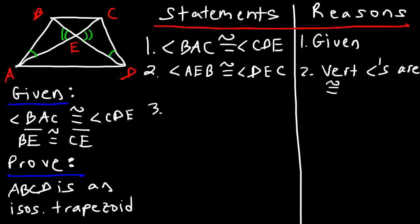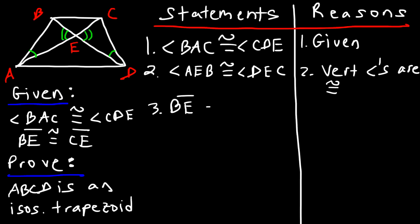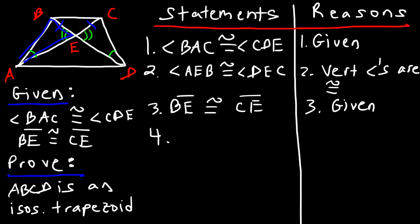Now let's move on to step 3. Focusing on the second given statement: BE is congruent to CE. This is BE and this is CE, and this is given. At this point we can show that the two triangles are congruent.